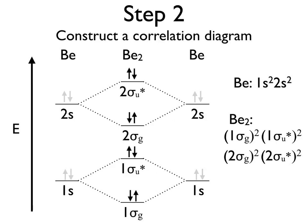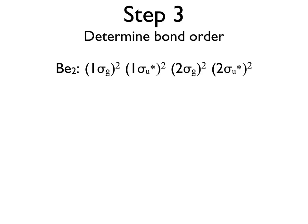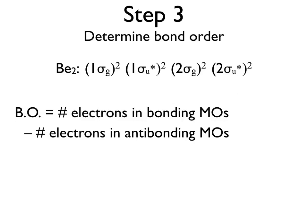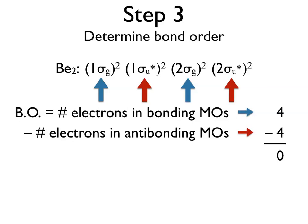We can then use that information to determine the bond order for this molecule. Bond order represents the strength of the bond between the two atoms, and is defined as the number of electrons in bonding molecular orbitals minus the number in anti-bonding molecular orbitals. The bonding orbitals — 1 sigma g and 2 sigma g — each have two electrons, giving us four electrons in bonding orbitals. The anti-bonding orbitals — 1 sigma u* and 2 sigma u* — also each have two electrons, giving us four electrons in anti-bonding orbitals. Taking the difference gives a bond order of zero.